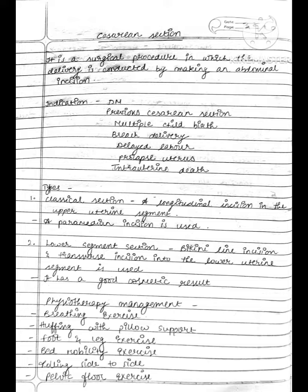Types: Classical C-section - a longitudinal incision in the upper uterine segment, a paramedian incision is used. Lower segment section - bikini line incision and transverse incision into the lower uterine segment is used. It has a good cosmetic result.